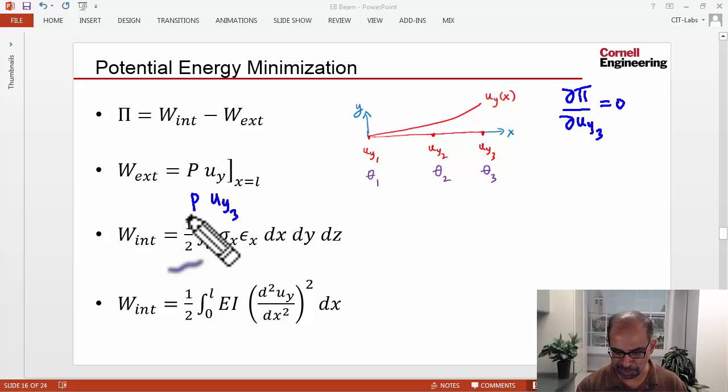When you differentiate that with respect to uy3, you will get P. So the algebraic equation will relate these four degrees of freedom to P, and it will be a linear relationship.